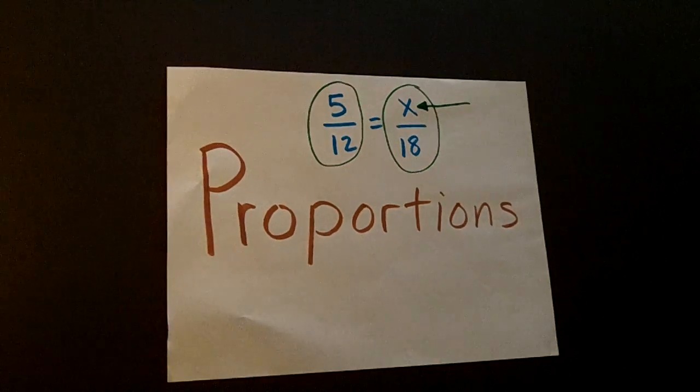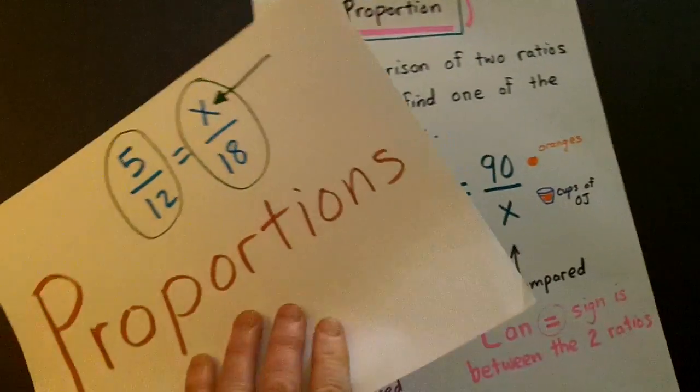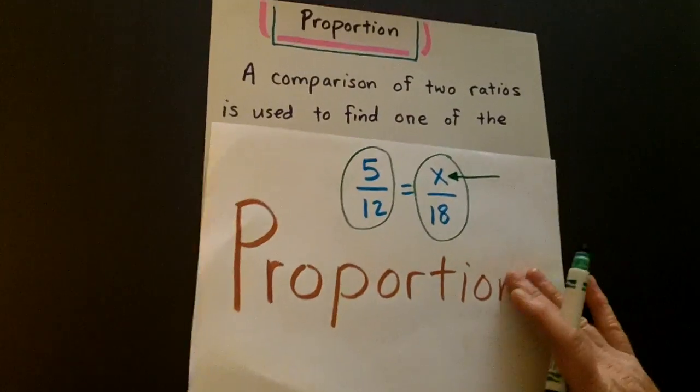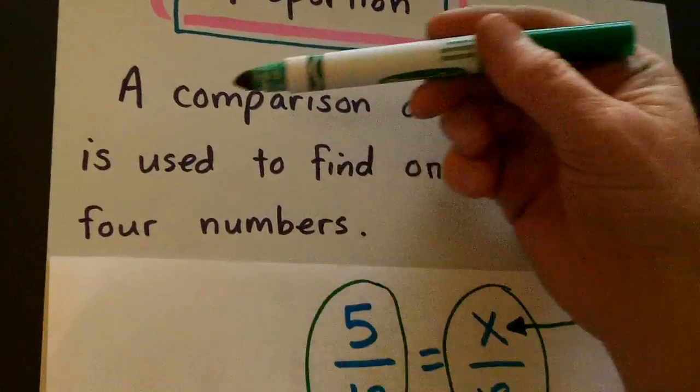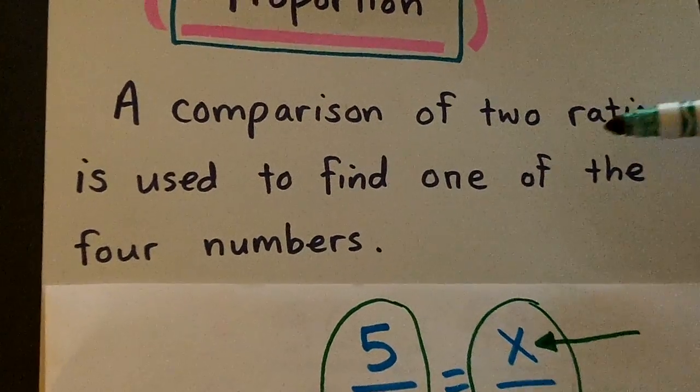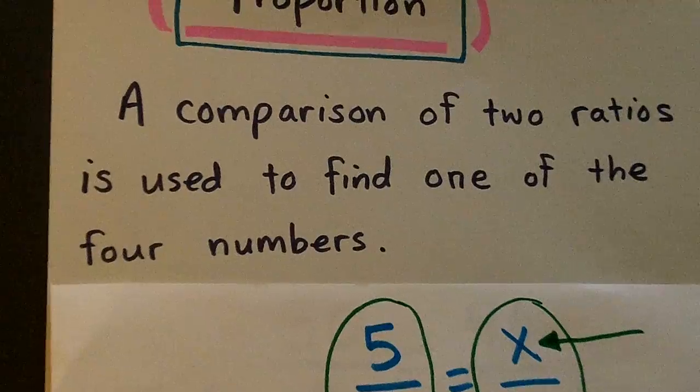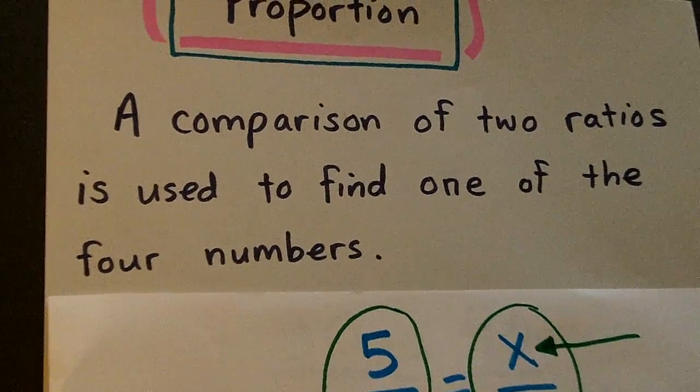Now, let's take a look at what our proportion is as far as a definition. A comparison of two ratios is used to find one of the four numbers.